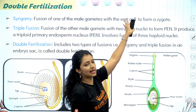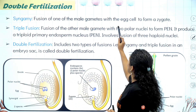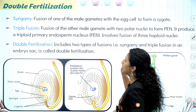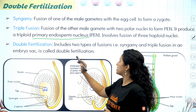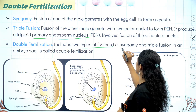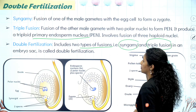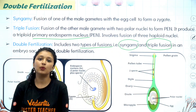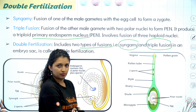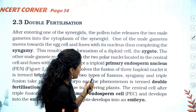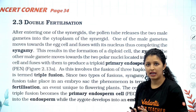So: fusion of one male gamete with the egg cell forms the zygote (diploid). Fusion of the other male gamete with two polar nuclei forms the primary endosperm nucleus. Double fertilization involves two types of fusion: syngamy and triple fusion. Since both happen inside one embryo sac, we call it double fertilization. This is from the NCERT paragraph — let's read it and wind up.